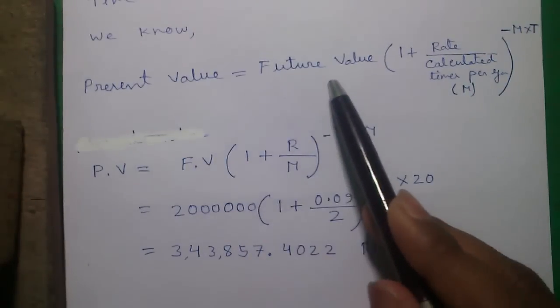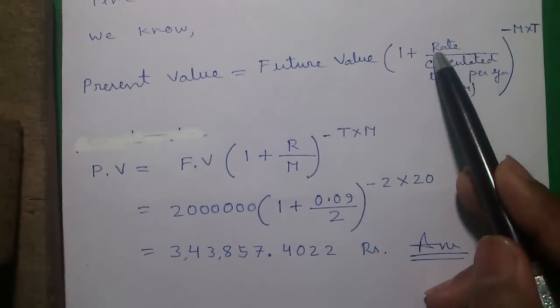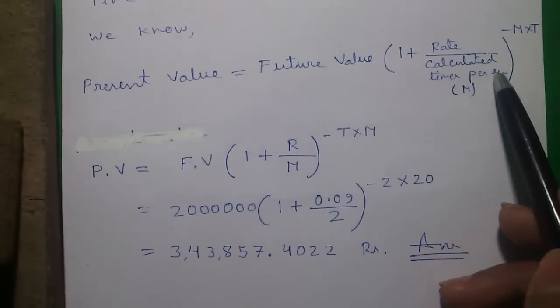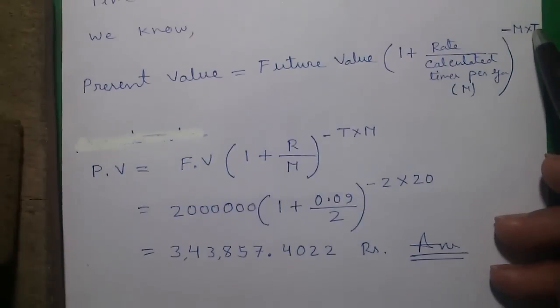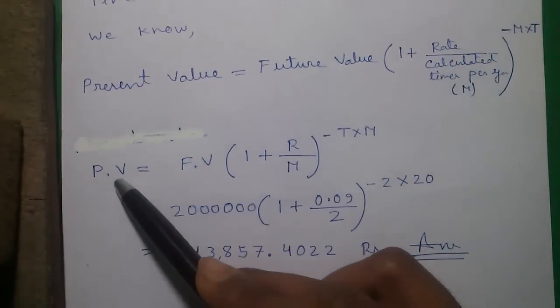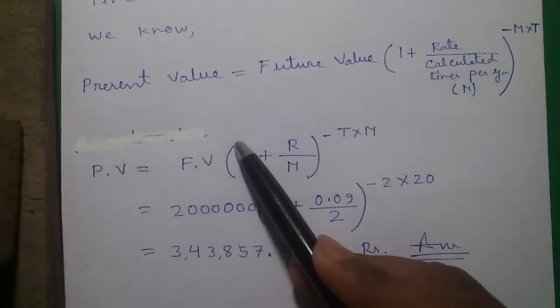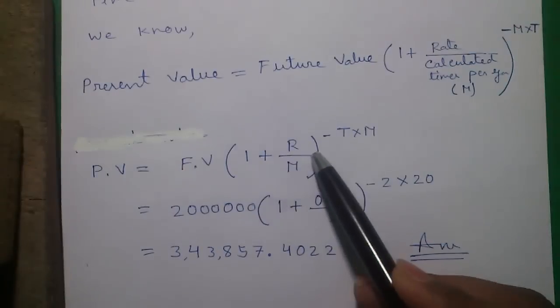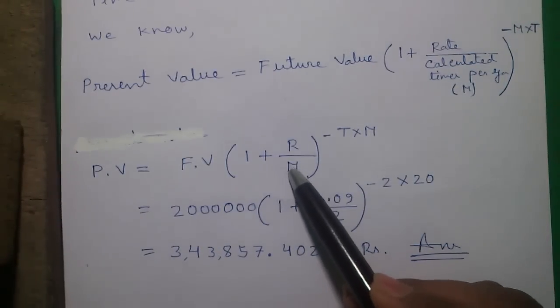So we know the present value equals to future value into 1 plus rate of interest divided by calculated times per year or M to the power minus M into T. Mathematically PV or present value equals to FV or future value into 1 plus R rate of interest divided by calculated times per year. So in our case it is 2 times per year or semiannually.